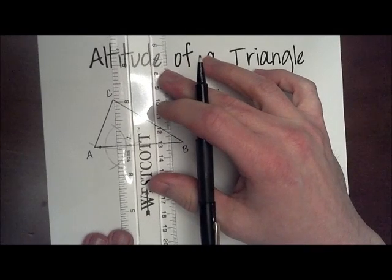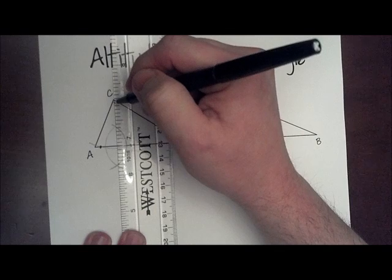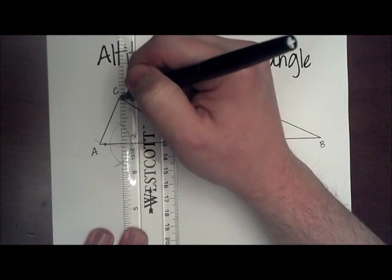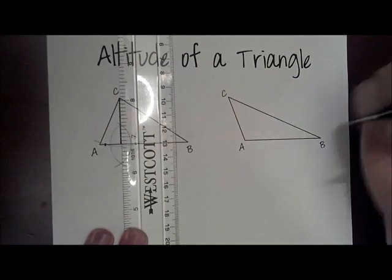Now, when you connect the endpoints of the football, it should line up and go directly through point C. Now, I'm going to draw from C down to AB a solid line, indicating that that's my altitude.